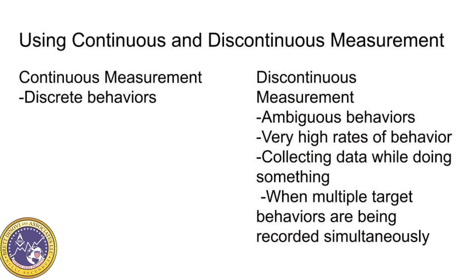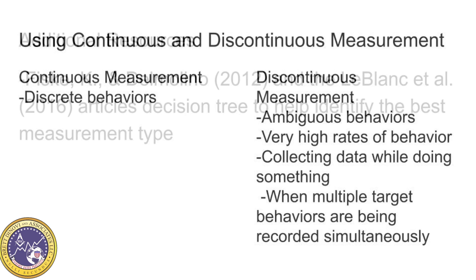To recap: for continuous measurements, it may be more appropriate to use when measuring discrete behaviors such as kicking. For discontinuous measurements, it may be more appropriate when collecting data on more ambiguous behaviors like vocal behavior that may have brief responses between words, very high rates of behavior, when collecting data while doing something else like teaching a class, for multiple target behaviors, and when multiple target behaviors are being recorded at the same time.